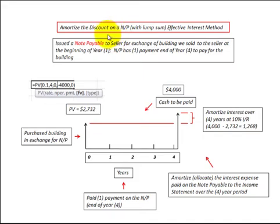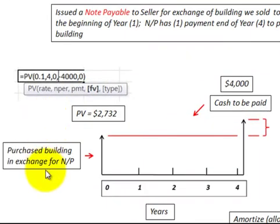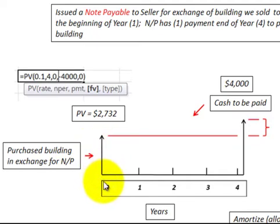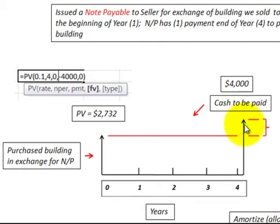What I'm going to demonstrate here is how to amortize the discounts on a notes payable with a lump sum, and we'll use the effective interest method. So what is our notes payable? Let's take an example here where we purchase a building in exchange for a notes payable. We purchase the building at the beginning of the first year, and then at the end of the fourth year we pay for that building on the notes payable.